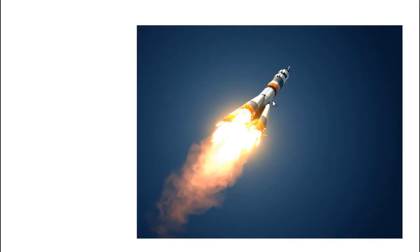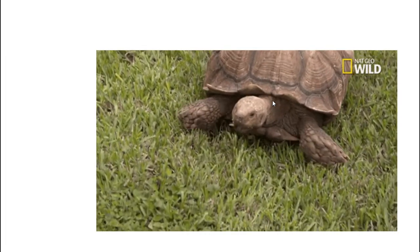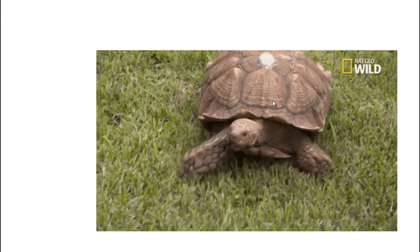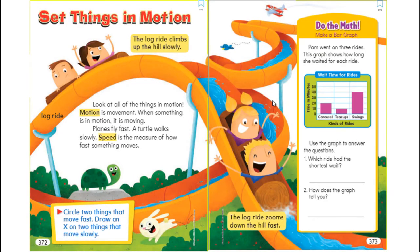Speed is how fast something is moving — sometimes it's slow, sometimes it's fast. We have to measure how fast something is going to know the speed. What do you think — is this rocket slow or fast? Of course it's fast. How about the turtle's movement? Slow.